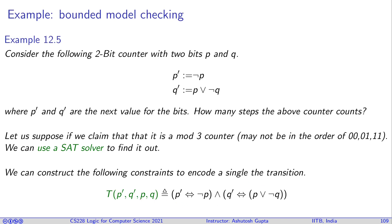So if somebody said, is it a mod 3 counter or not, you can ask the SAT solver. How do we encode that? We construct the following constraints to encode a single transition. So what is single transition? If I give you p, q, it gives you p prime and q prime. So you can write p prime is equivalent to NOT p, and q prime is equivalent to p OR NOT q.